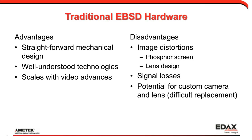The general advantages of traditional hardware are a straightforward mechanical and optical design using well-understood technologies, and the ability to scale with video advances by swapping the sensor in the back — the front half of the design remains nearly identical. The disadvantages include image distortions from the phosphor screen and lenses, signal losses at each stage of image transfer, and potentially prohibitive cost to upgrade cameras depending on how customized the design is.